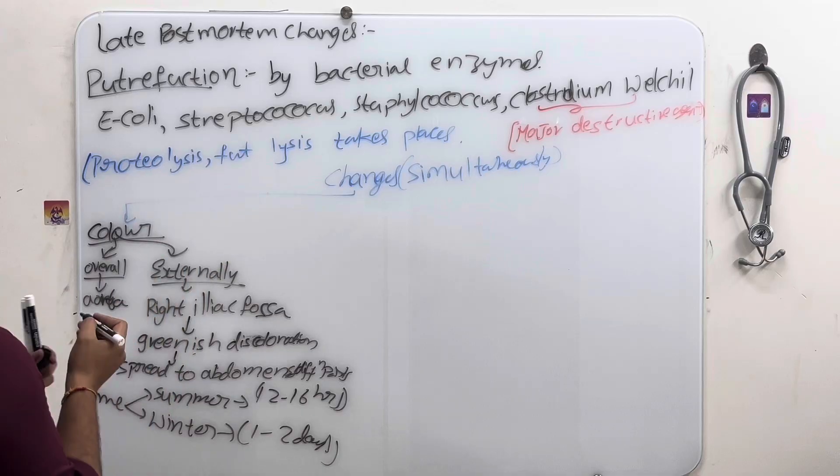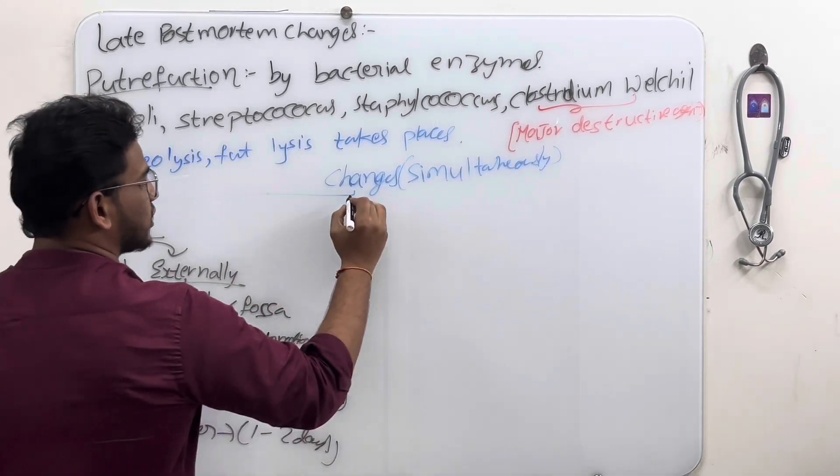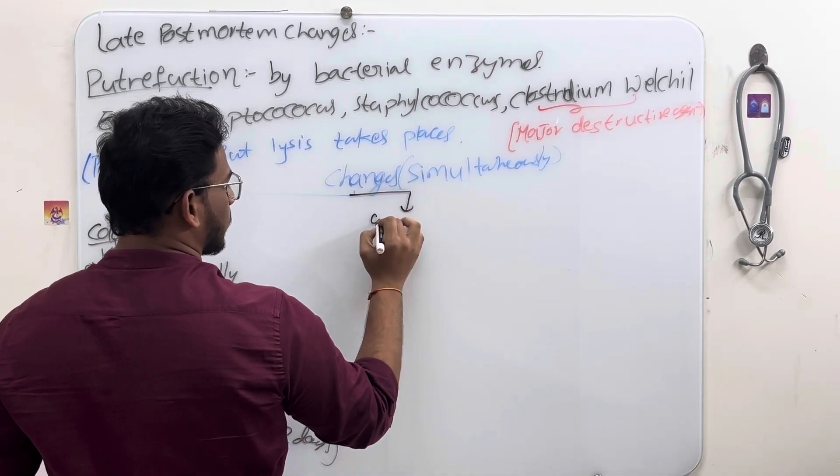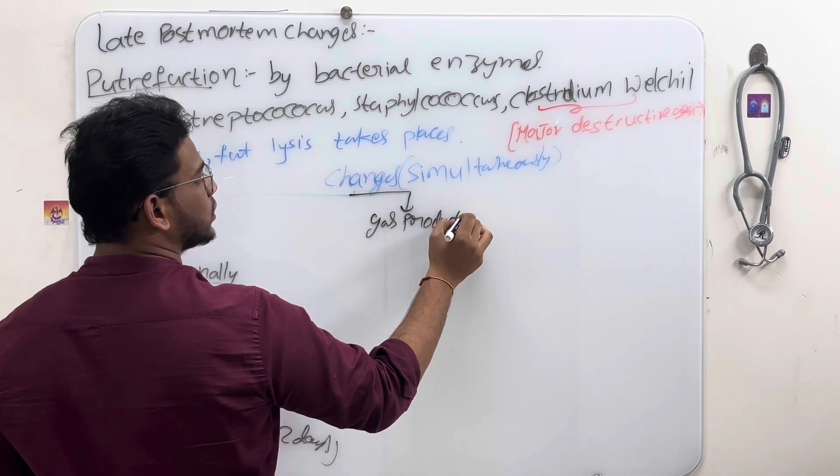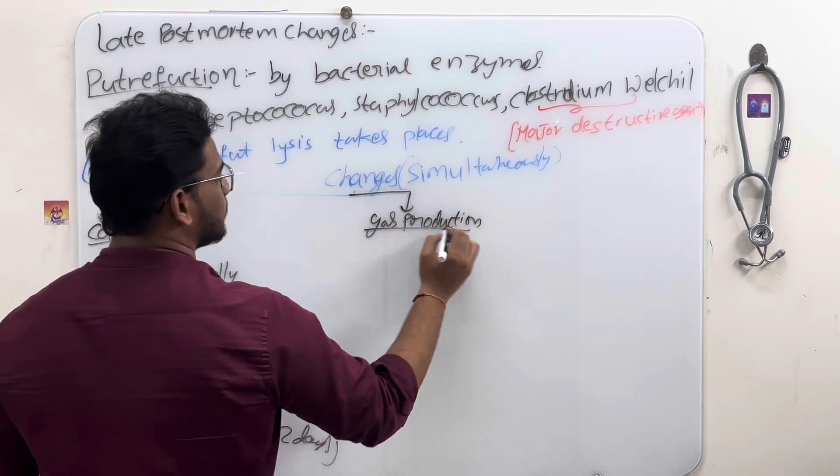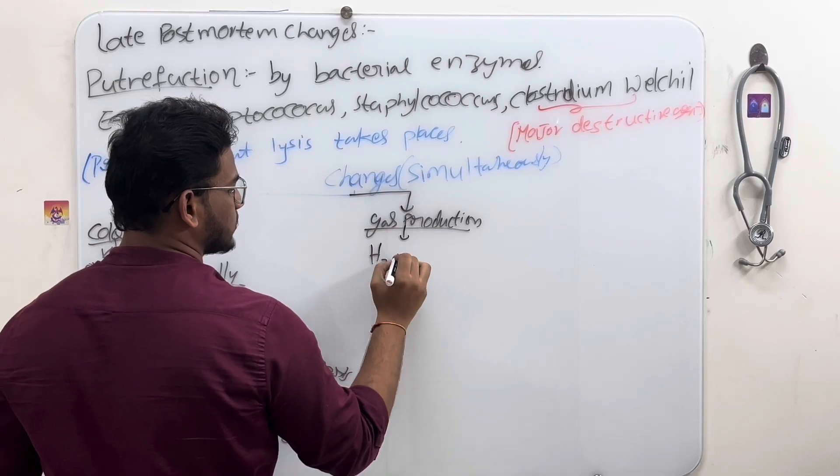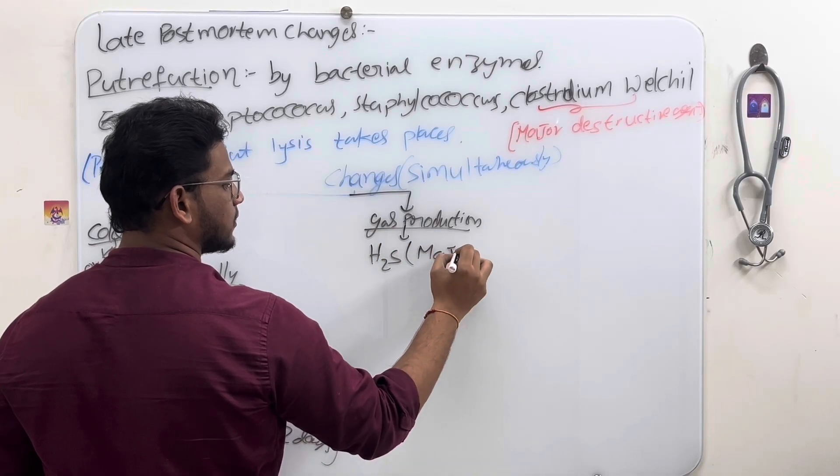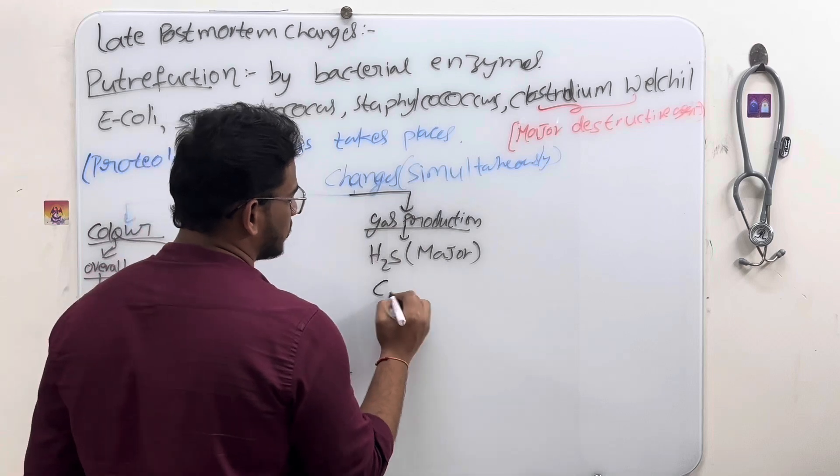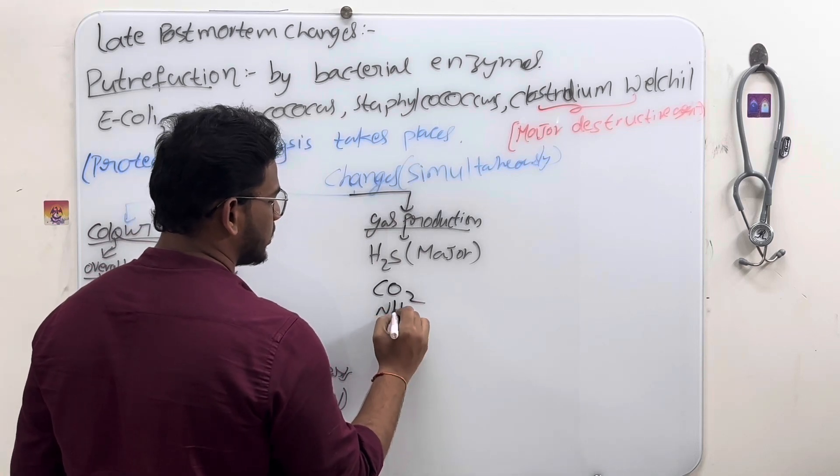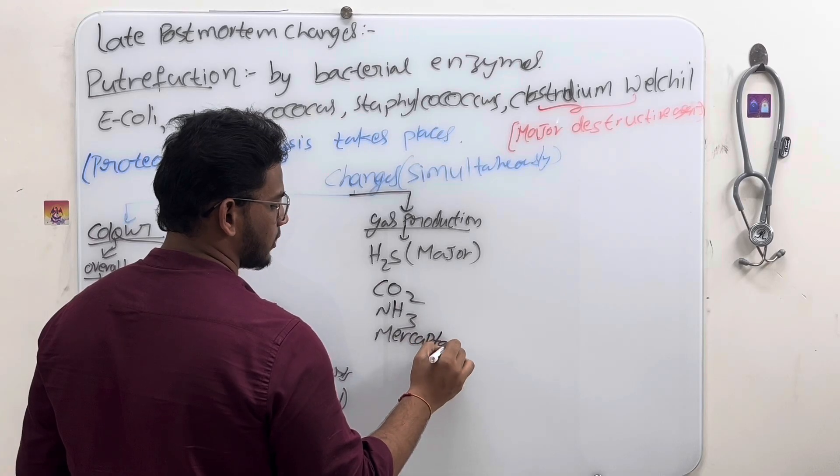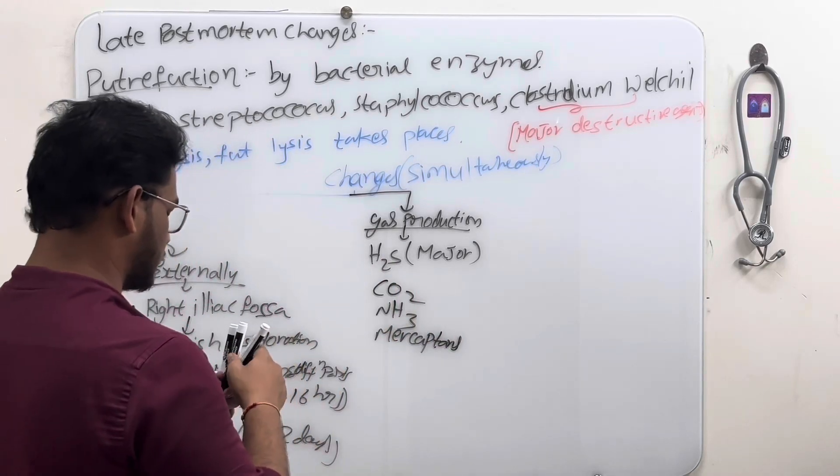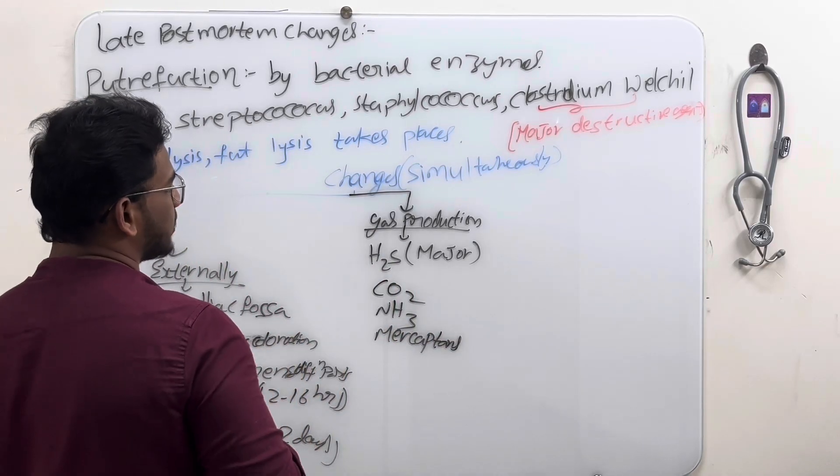First is color change, then gas production. What are the gases that produced during putrefaction? Remember, majorly H2S, then CO2, NH3 and mercaptans. Remember H2S majorly.